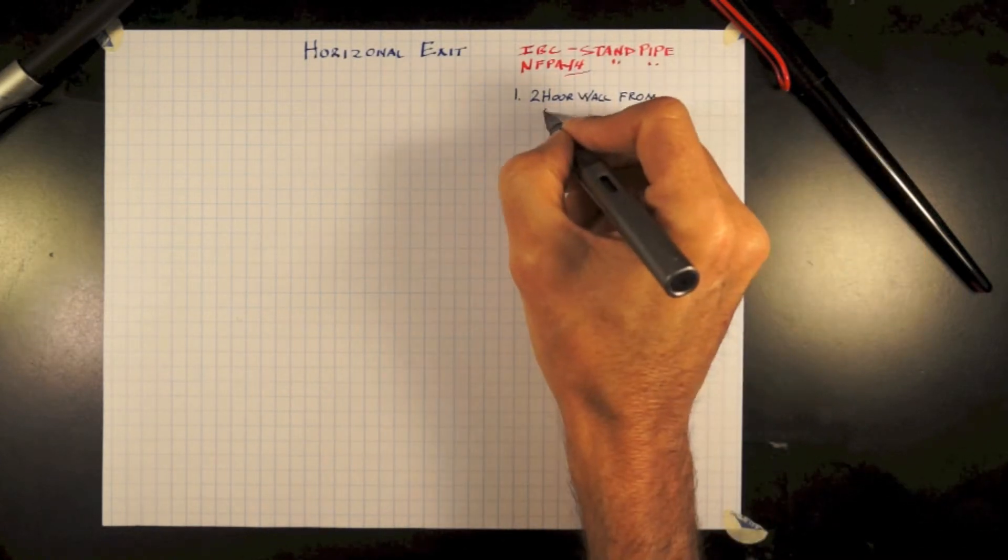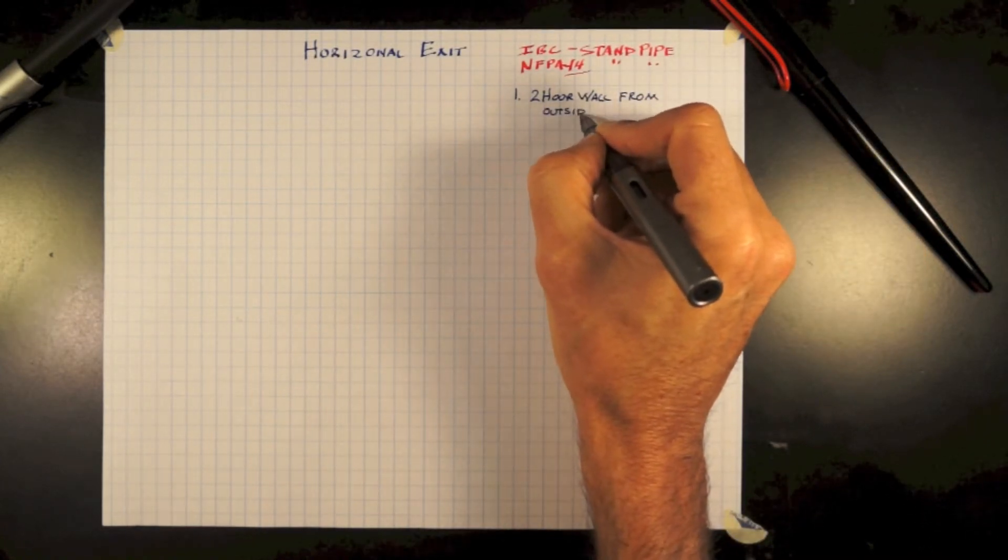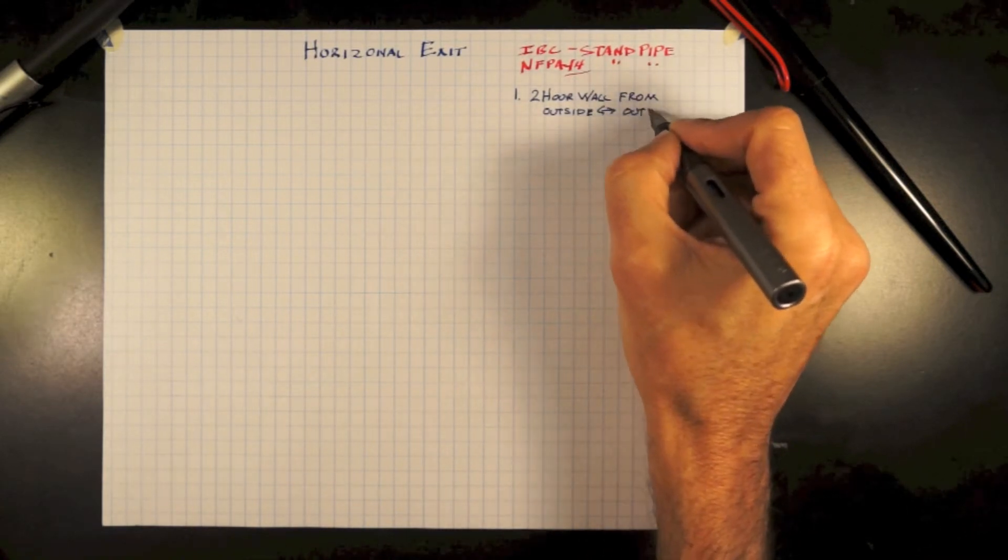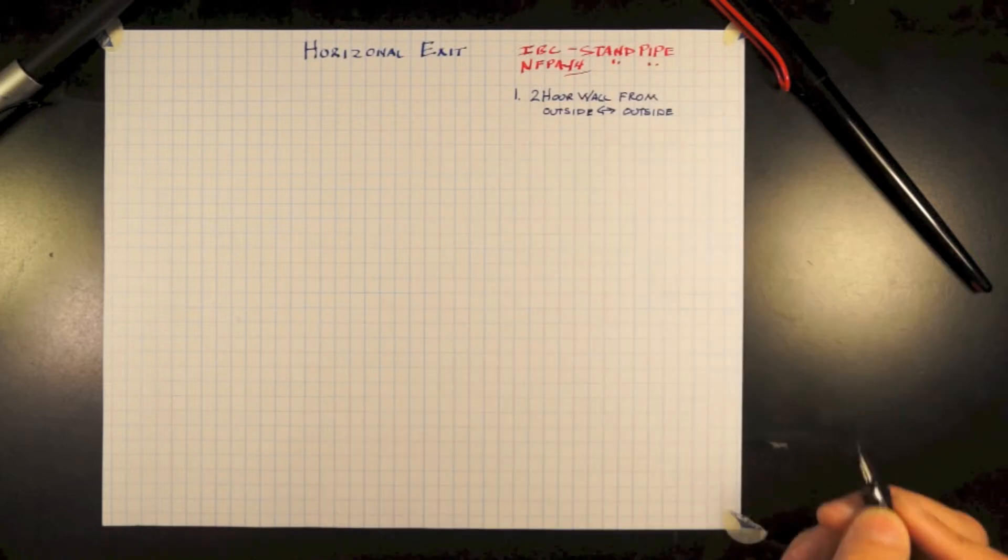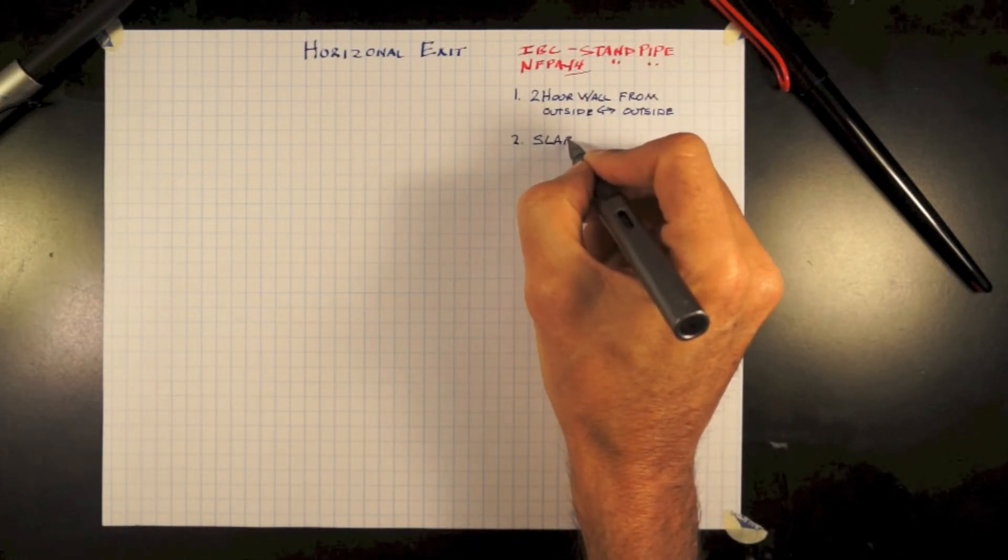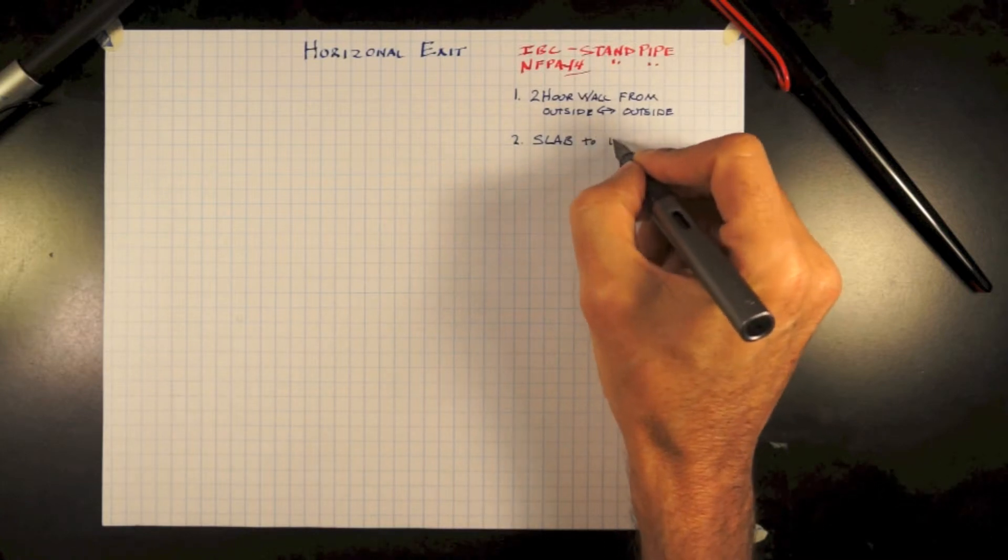Horizontal Exit is required to be a two-hour wall from outside of building to outside of building, continuous. Number two, it must go from slab to deck above and be sealed.